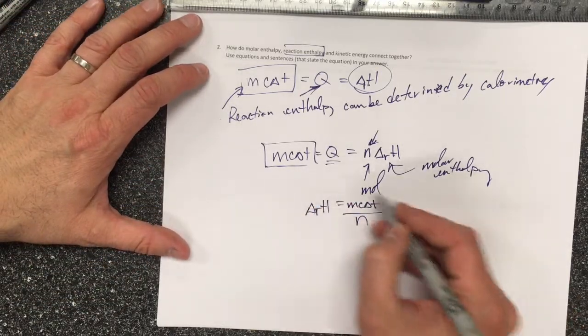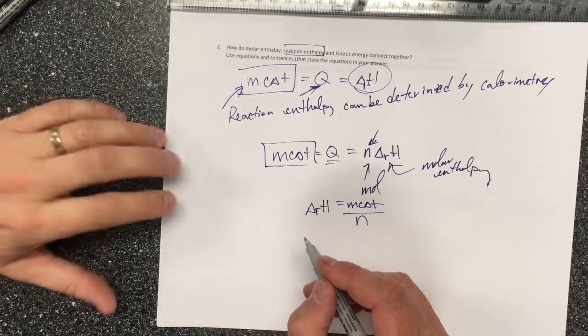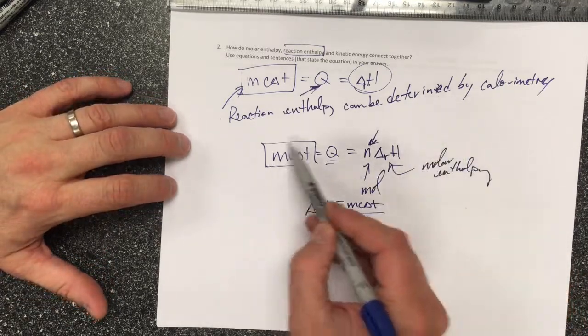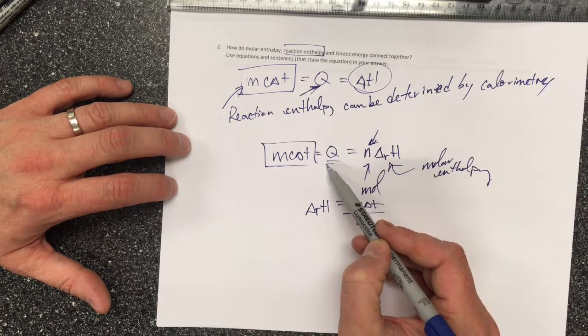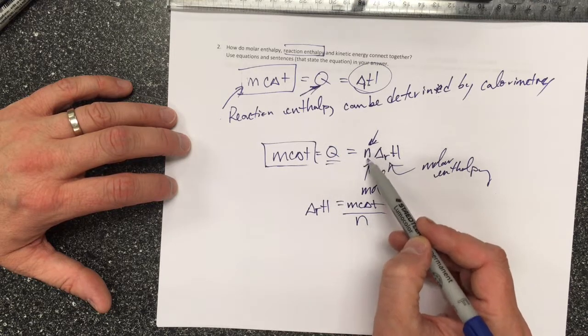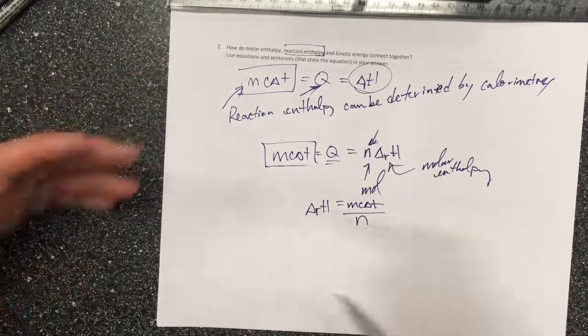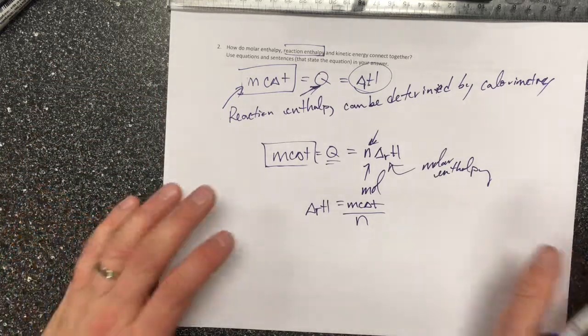then I can calculate the molar enthalpy. So the kinetic energy change we're measuring allows us to calculate the enthalpy change, which equals the number of moles times the molar enthalpy. That's how they all connect together.